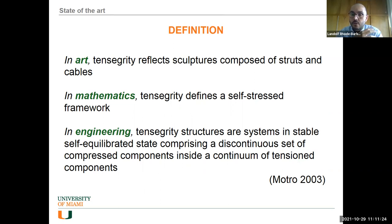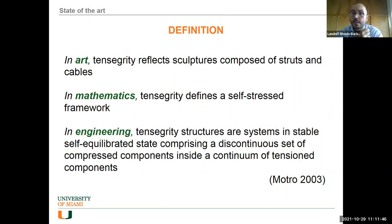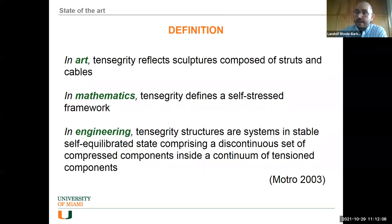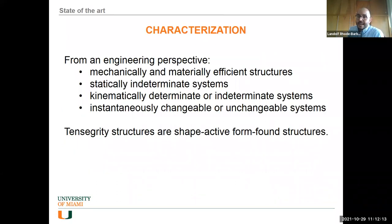There is much discussion about continuity — whether compressive elements touch each other or not. Even Motro's definition allows more than one strut. But the key property is stable self-equilibrium: stable means it returns to that state if disrupted, and self-equilibrium means it's stable by itself. Think of it like a pneumatic structure — a soccer ball. You inflate it; the stretched fabric on the outside is in tension while inside you have compression. It's the same thing with pre-stress of the cables.